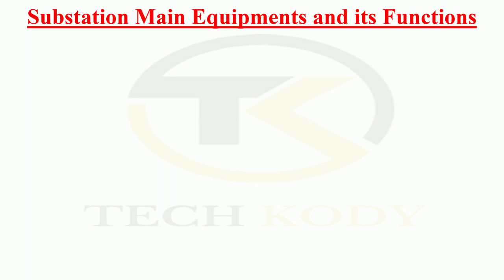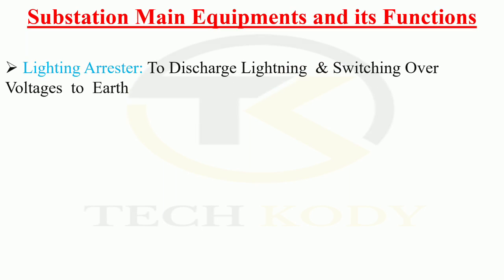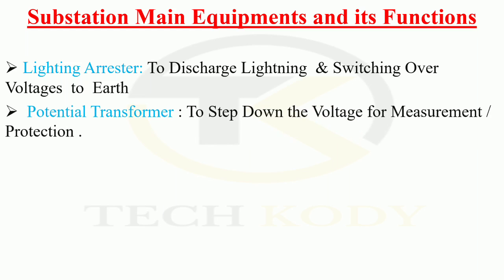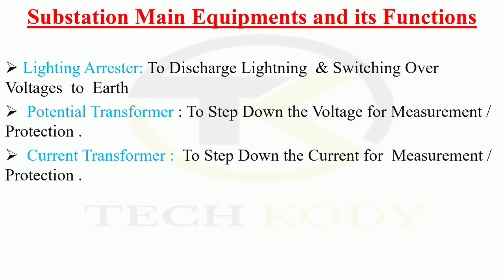Substation main equipment and its functions. Lightning arresters: to discharge lightning and switching overvoltages to earth. Potential transformer: to step down the voltage for measurement or protection. Current transformer: to step down the current for measurement or protection.